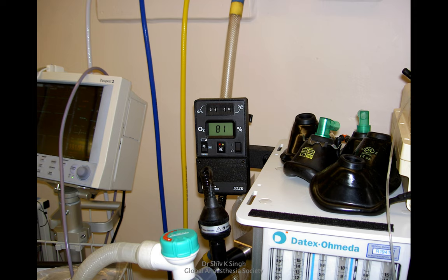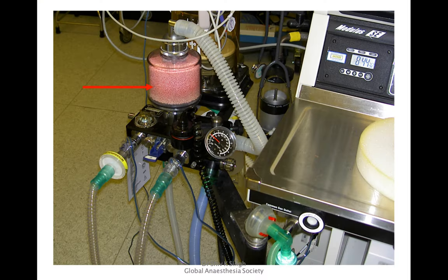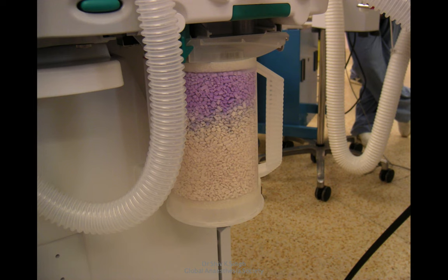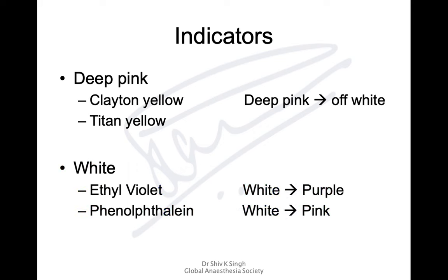Oxygen analyzers are a very important integral part of modern machines. You also attach a breathing system, including circle systems that use soda lime. You should know the constituents of soda lime and the reactions that occur when carbon dioxide contacts it — how heat and water are generated, maintaining humidification and temperature. Know the indicators: Clayton Yellow and Thymol Blue (or Ethyl Violet which turns from white to purple, and Phenolphthalein which turns from white to pink) to determine when soda lime is exhausted.